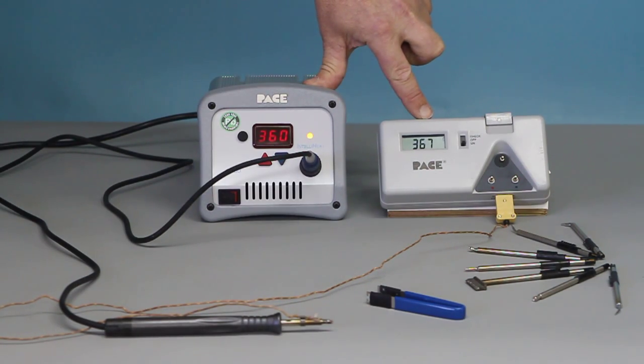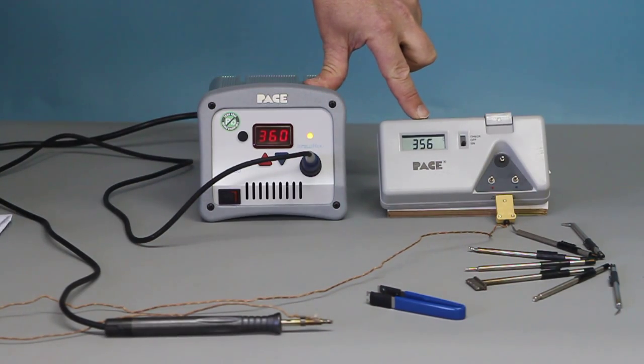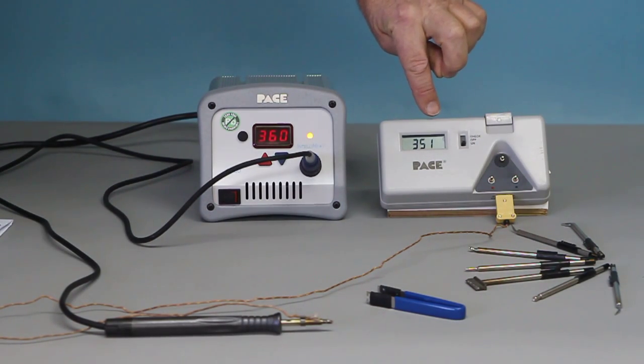I'm going to take a reading off the tip temperature monitor now. I'm going to write this down on a piece of paper so that I get this right. The tip temperature is running at between 350, 353, 354. It ranges a little bit. I'm going to call it 352.